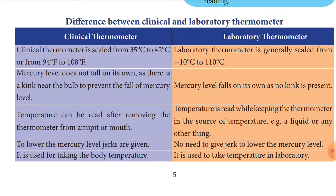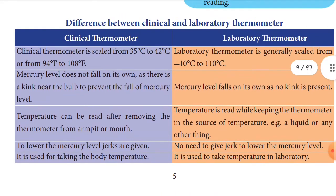Third point — in the clinical thermometer, the temperature can be read after removing the thermometer from the armpit or mouth. In the laboratory thermometer, the temperature is read while keeping the thermometer in the source, such as a liquid. Fourth point — to lower the mercury level in the clinical thermometer, jerks are given. Last point — the clinical thermometer is used for taking body temperature (37°C / 98.6°F), while the laboratory thermometer is used to take temperature in the laboratory only.